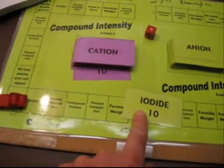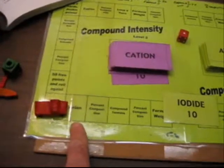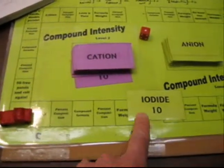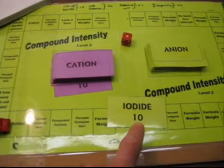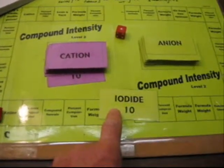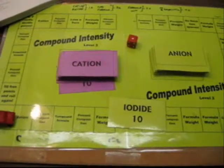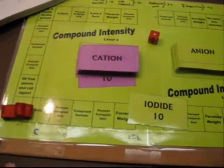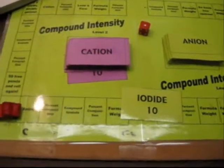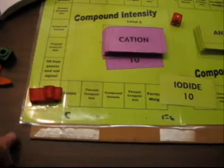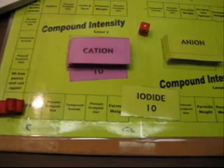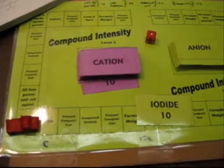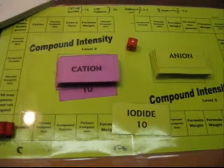The job, if you just land on an anion or cation space, is just to identify the symbol and charge for that anion. On their team's piece of paper that each team will have, what they'll do is they'll just write the symbol and charge, in this case iodide, so it'll be I-1, and they'll keep that pretty much hidden from view.